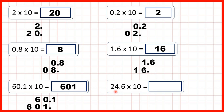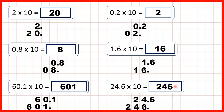So what's 24.6 times 10? We write the number out, copy down the decimal point, and to multiply by 10 we're moving the digits 1 square to the left. Now the decimal point is at the end, so we have 246 as our answer.